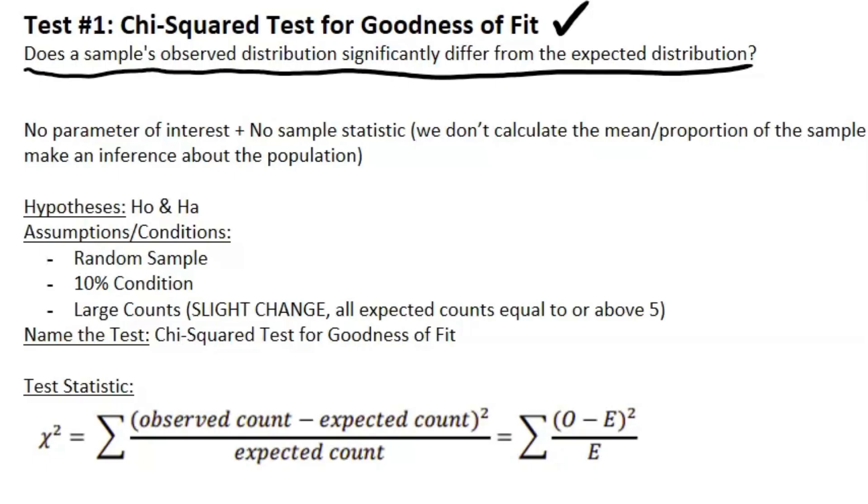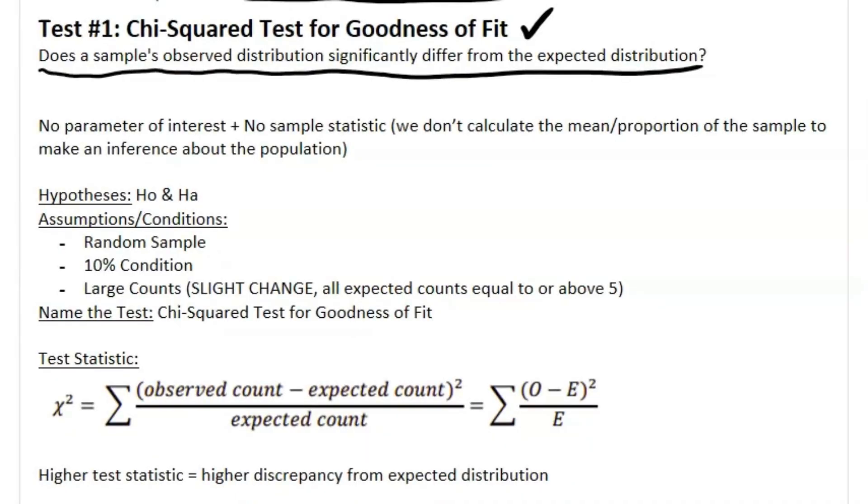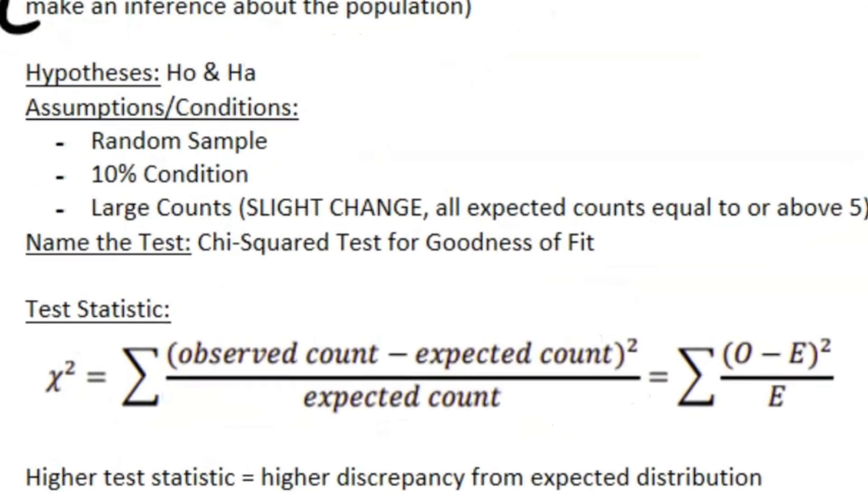That is an example of where you would use a chi-squared test for goodness of fit. Now, something that actually differs between chi-squared tests and the significance tests for proportions or means is you actually don't have a parameter of interest, and you also do not have a sample statistic. Instead, we're going to jump straight into the hypotheses: your null and your alternative hypothesis.